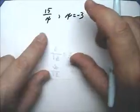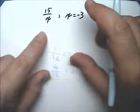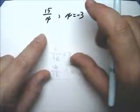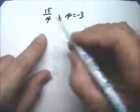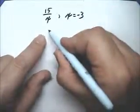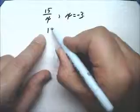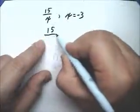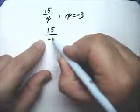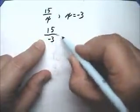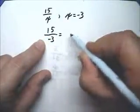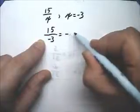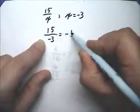Then we have 15 over x when x is negative 3. So this is 15 divided by negative 3, and this equals negative 5.